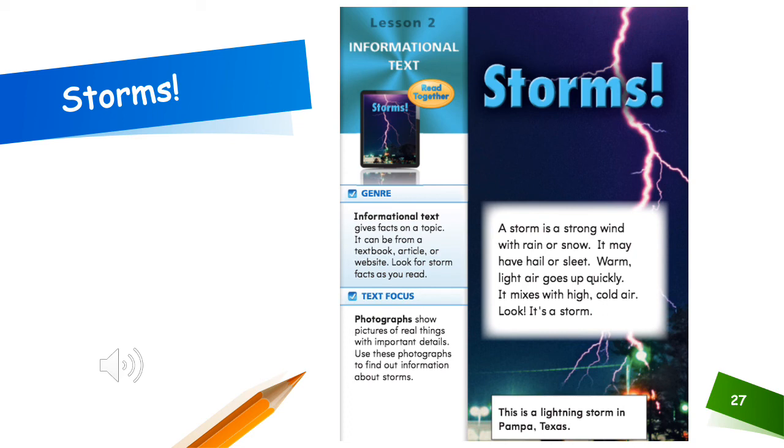Storms. A storm is a strong wind with rain or snow. It may have hail or sleet. Warm, light air goes up quickly. It mixes with high, cold air. Look, it's a storm. This is a lightning storm in Pompa, Texas.